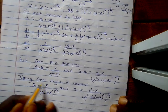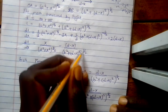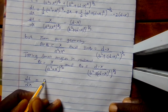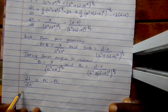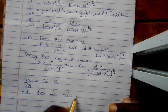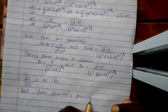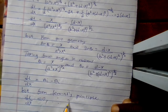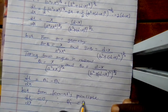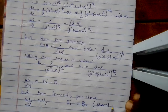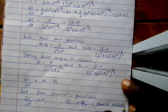So when I substitute these in, I get dL/dx equal to sin θᵢ minus sin θᵣ. From Fermat's Principle, dL/dx equals zero. Therefore, sin θᵢ equals sin θᵣ, which gives θᵢ equals θᵣ. This is the law of reflection.